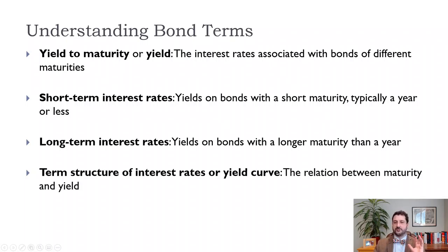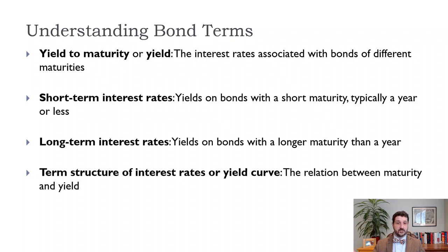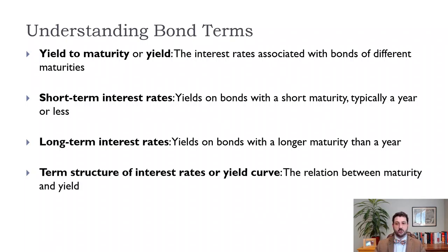There are a lot of terms here — they're nice to have on the slides, though I don't necessarily expect you to memorize each one. Yield to maturity, or yield, is the interest rate associated with bonds of different maturities. We'll talk about the yield curve for government bonds, which graphs the yield from the shortest term to the longest term bonds. Short-term interest rates are yields on bonds with usually a year or less — Treasury Bills are U.S. government bonds with a year or less maturity. Treasury Bonds are for more than a year. The term structure of interest rates, or yield curve, is the relationship between maturity and yield.